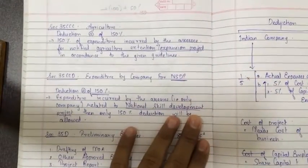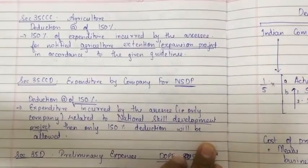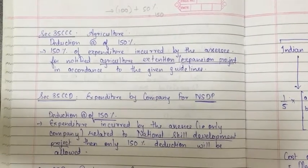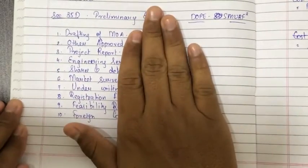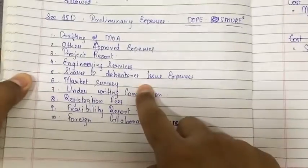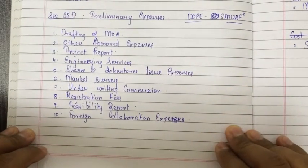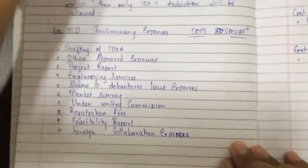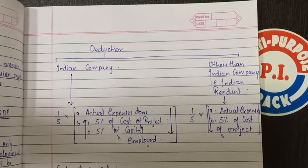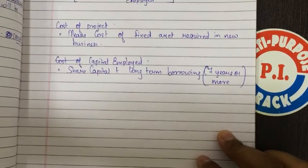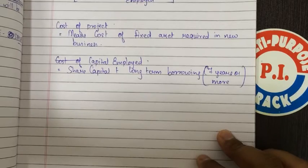Please pause the video and copy the first two sections — Section 35D. Copy this on a fresh page; the remaining part will come on one page. Please pause and copy, including the deductions and cost of project sections.